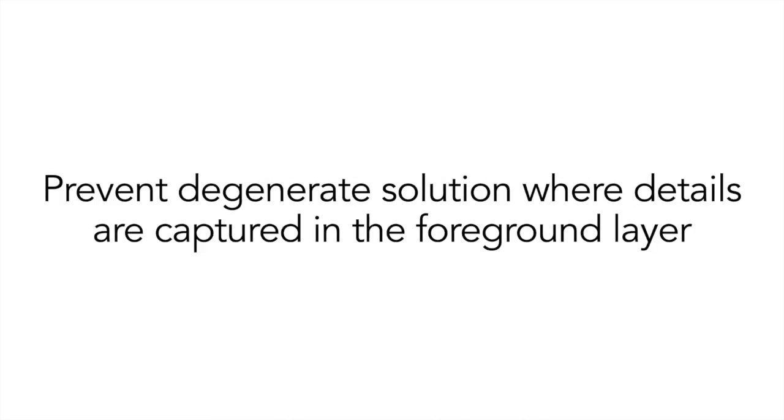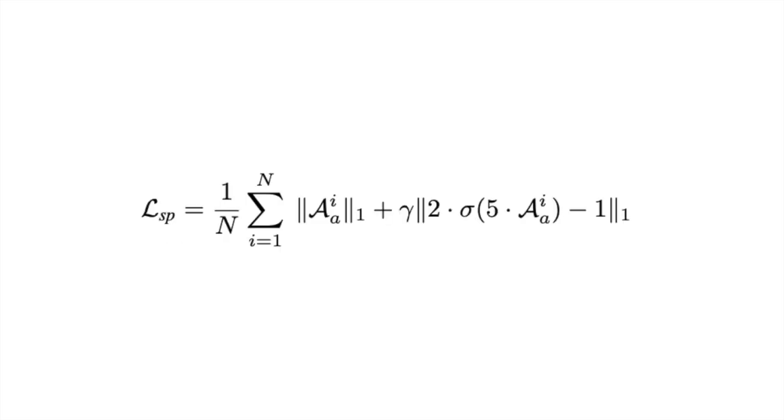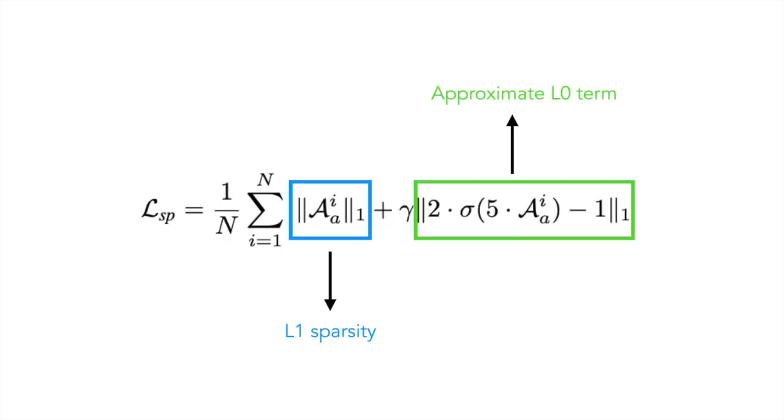Finally, we incorporate regularizations on the alpha predictions to prevent degenerate solutions where all the details are captured in the foreground layer. We use a regularization term shown here, where the first term is an L1 sparsity loss and the second term is an approximate L0 loss.